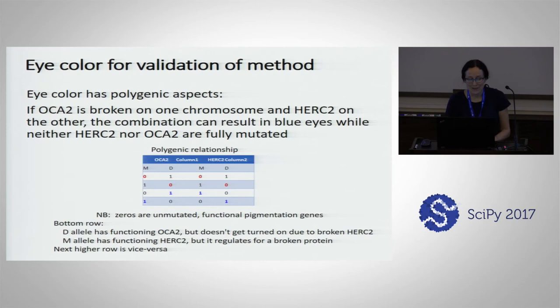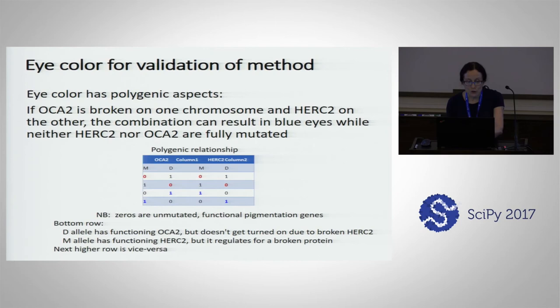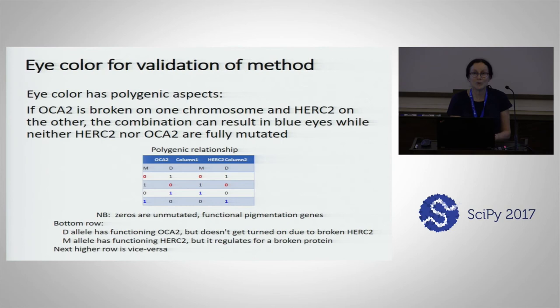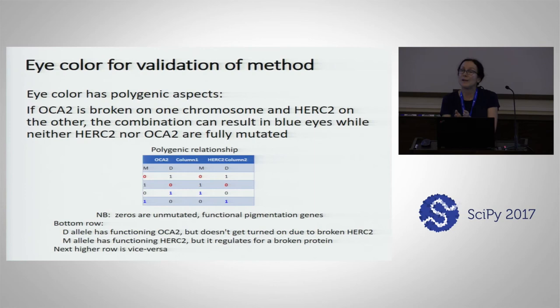On the bottom row, we see that the dad allele works fine for OCA2 but is broken for HERC2 — so even though the OCA gene is fine, HERC2 regulates it so it never gets made. For the mom allele, you got a working HERC2 but a broken OCA2 — so even though it gives a signal to create, it's a broken gene. This person in the bottom row will have blue eyes without having a recessive two-allele mutation. This is difficult to detect because we don't have the phasing information — we don't know what's on what chromosome.